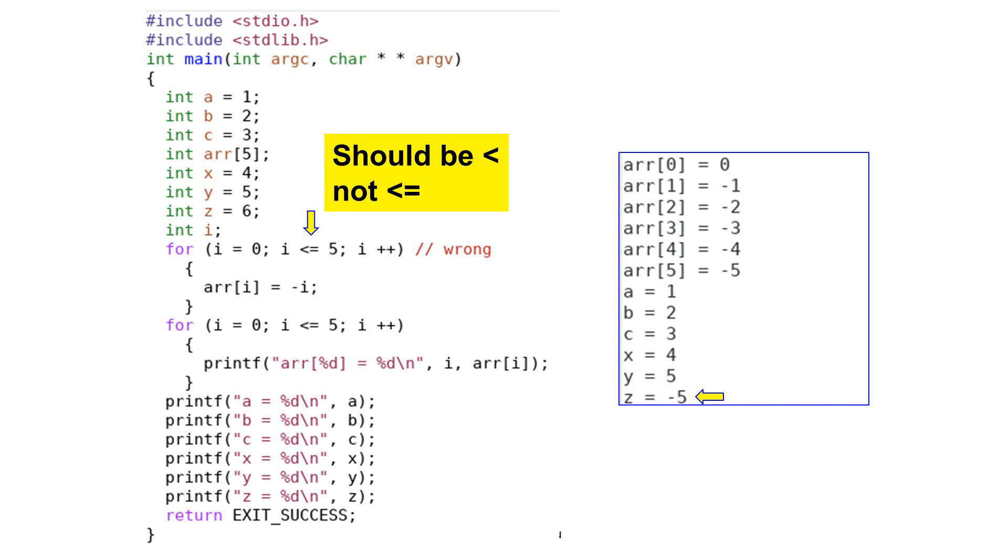What may happen? At first glance, the program appears alright. When we print the values of the array, the program prints 0, minus 1, minus 2, minus 3, and minus 4.